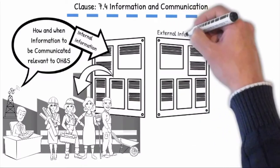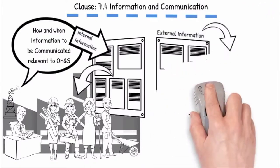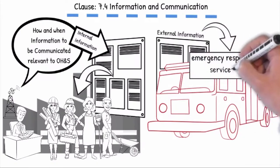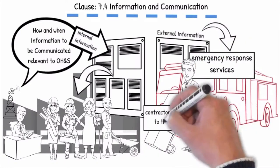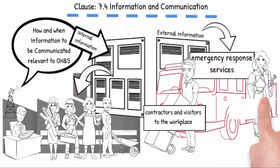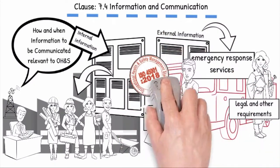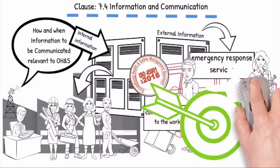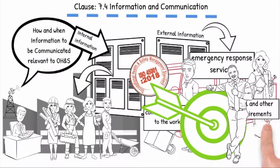The organization shall externally communicate information relevant to the OHS management system, as established by the organization's communication process and taking into account its emergency response services, information to contractors and visitors to the workplace, and the legal and other requirements. The organization shall define the intent to be achieved by informing and communicating, and shall evaluate whether the objectives have been met.